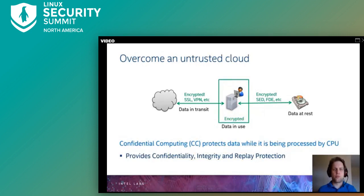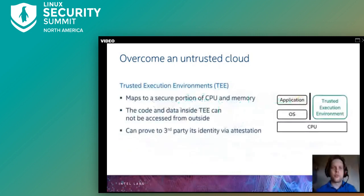This new form of computing is called confidential computing. It protects your data against confidentiality and integrity violations while protecting against replays, and it mainly relies on encryption of the main memory. This new form of computing relies on trusted execution environments, or TEEs. A TEE typically is implemented in hardware — in this case shown in the CPU — and the hardware is trusted to isolate the TEE from the remaining system by mapping the TEE's memory in a secure portion, denying access from any non-TEE execution.